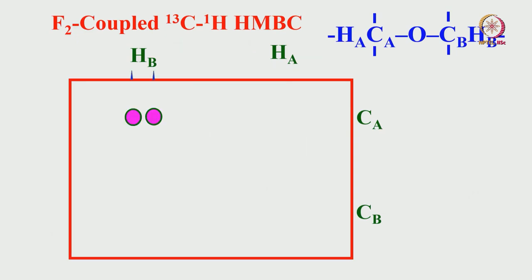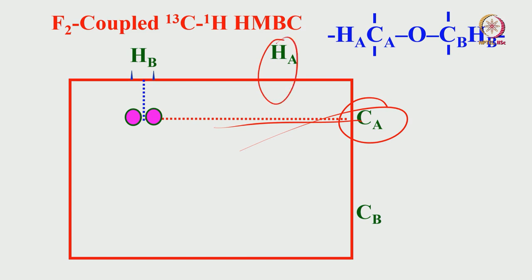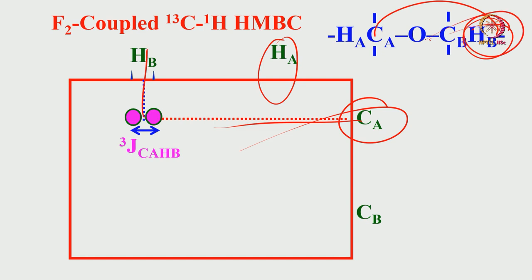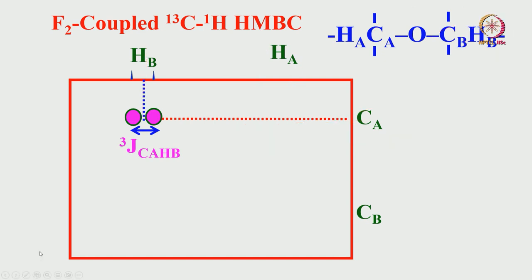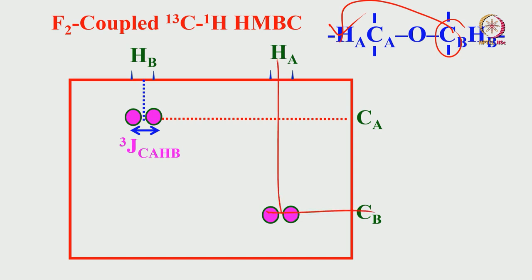Looking at the F2-coupled HMBC spectrum: going across the spectrum, we do not see the one-bond correlation — that is suppressed, as in HSQC. The cross peaks here come from correlations to remote protons. This remote proton appears as a doublet because of the 3-bond JCH coupling. Carbon B also appears as a doublet because it correlates to proton HA, via the 3J CB-HA long-range coupling. So along one axis you get carbon chemical shift, and along the other axis you get proton chemical shift.